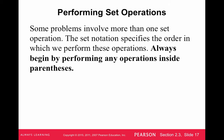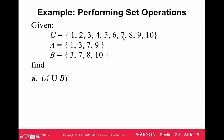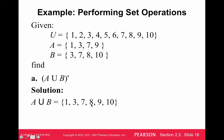Sometimes we have more than one set operation. We perform operations by doing the inside parentheses first and then going out — like normal math. For example, the universal set is numbers 1 through 10, A = {1, 3, 7, 9}, B = {3, 7, 8, 10}. To find (A ∪ B)', first compute A ∪ B = {1, 3, 7, 8, 9, 10}. Then take the complement — any numbers from 1 through 10 not in that set — giving {2, 4, 5, 6}.